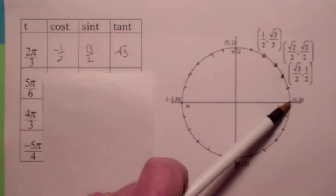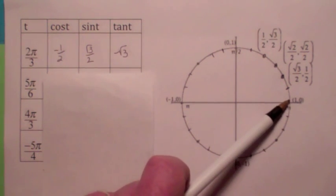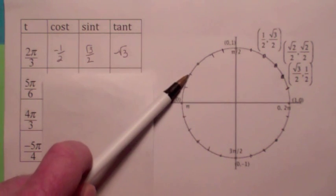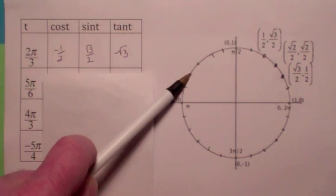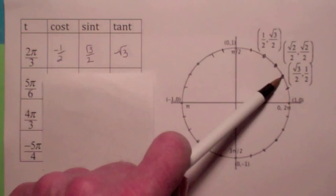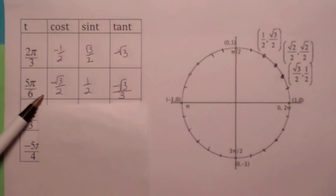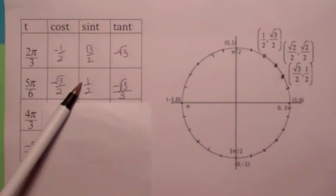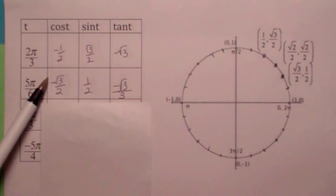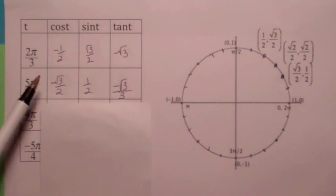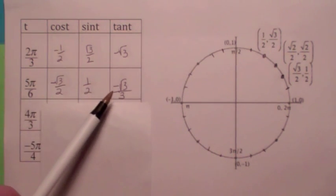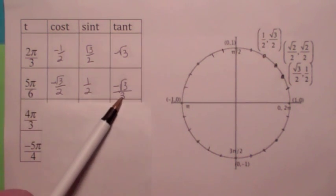For t = 5π/6, that puts you right there in the second quadrant. It's the same reference point as in the first quadrant, but again x is negative and y is positive. When you take the tangent, you get 1/2 divided by -√3/2, which is -1 over √3, and when you rationalize it, it becomes -√3/3.